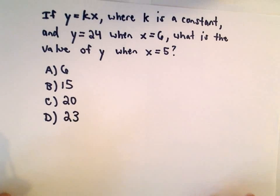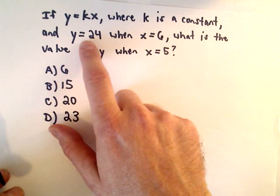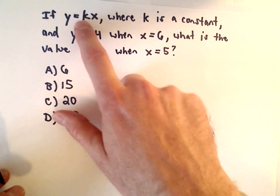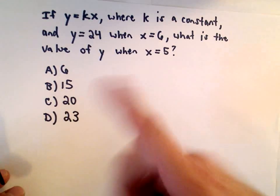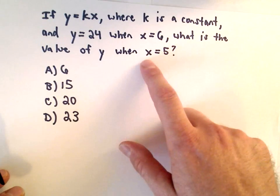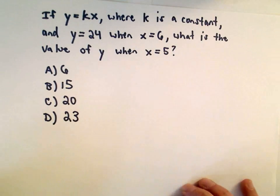This one hopefully won't be too bad. It's just using this information that y equals 24 and x equals 6 that's going to allow us to solve for k. Once we solve for k we can substitute x equals 5 and we'll get the value of y.